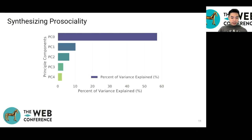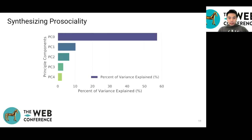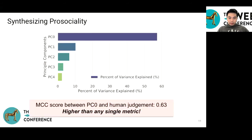To test how much regularity there is in prosocial behavior, we perform PCA on the obtained metric values across all conversations. The first PCA component explains 57.4% of the variance in the prosocial metric values, while the second component captures roughly only 10%, suggesting the first component effectively captures shared behavior. We calculate its MCC score with human judgments, and the resulting MCC of 0.63 is higher than any single metric, strongly reflecting human judgments of prosociality. Hence, we take the first component as an effective proxy of prosociality for the prediction task.